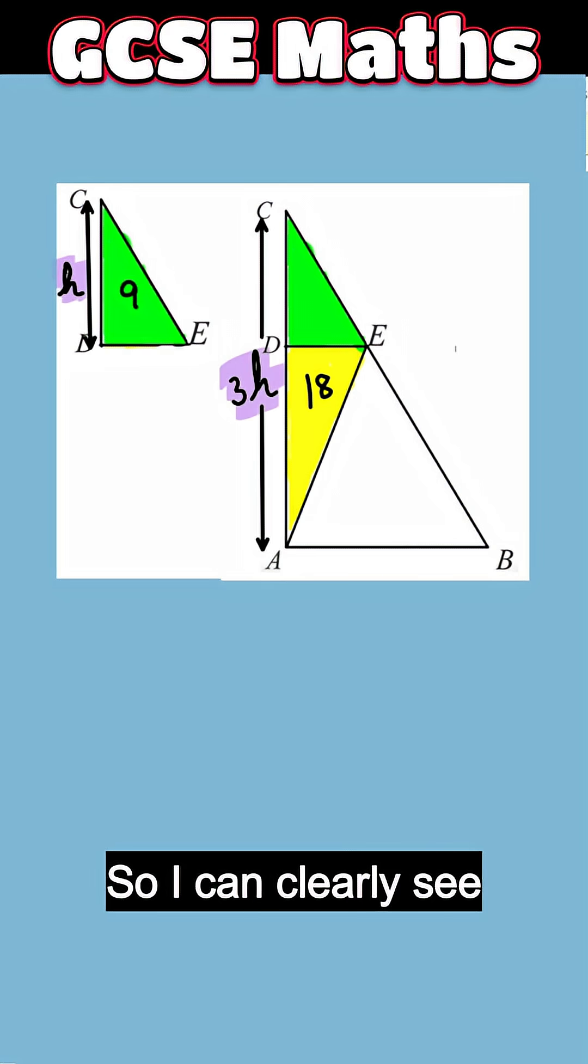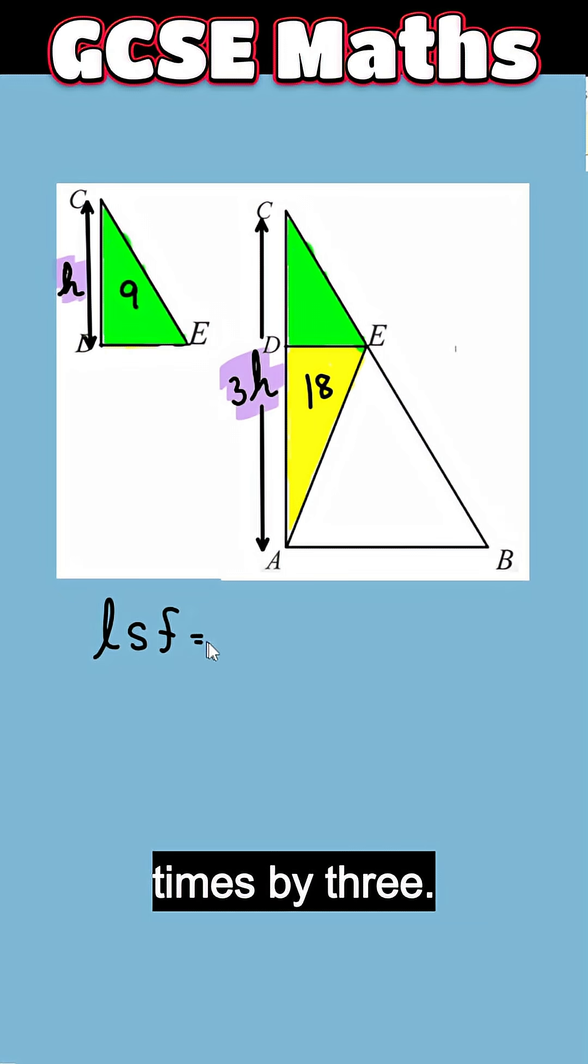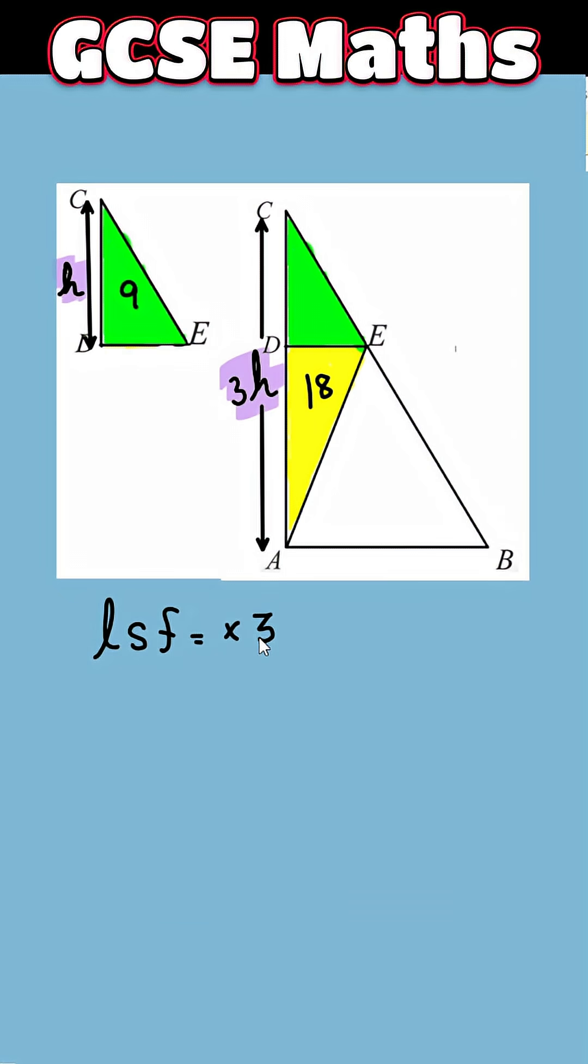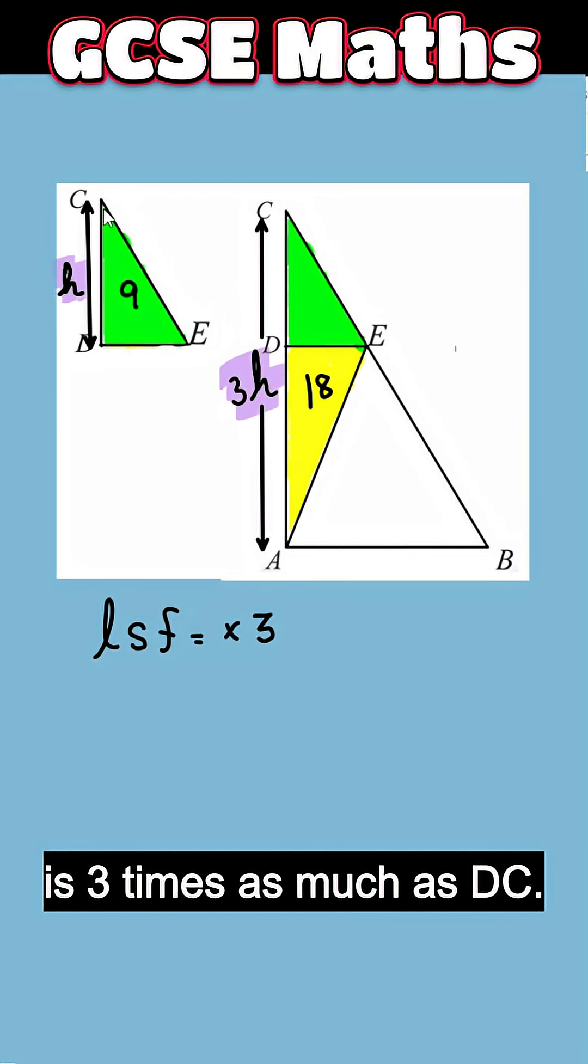So I can clearly see the linear scale factor is times by 3. How do we know? Because this height AC is three times as much as DC.